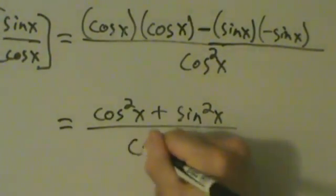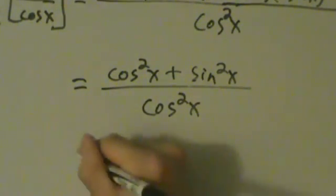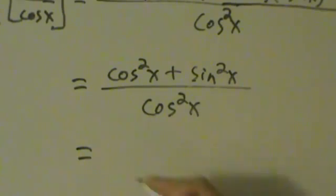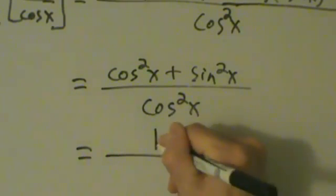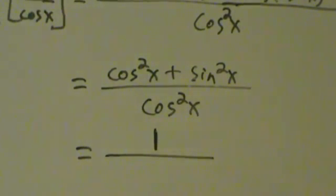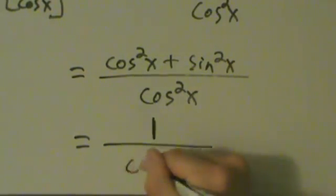That's being divided by cos²(x). Remember the Pythagorean identity: cos²(x) + sin²(x) is always equal to 1. That's one of the most important identities in trig, and maybe in math in general. So cos²(x) + sin²(x) = 1, and we still have cos²(x) on the bottom.